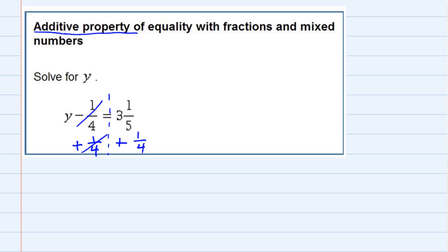So on the left hand side the minus 1 fourth and the plus 1 fourth cancels giving me just the y and that's what I wanted since I'm solving for y but on the left hand side I have to see what that gives me. I have a 3 and 1 fifth and I'm adding 1 fourth.